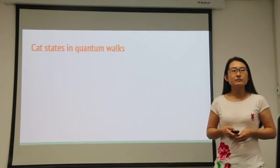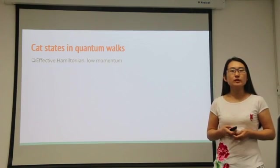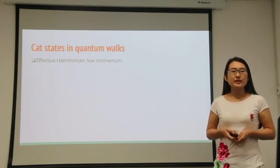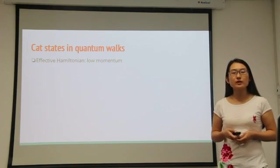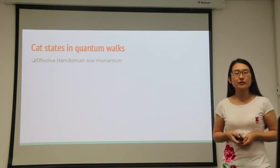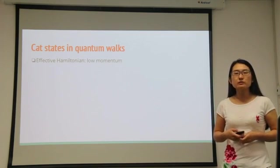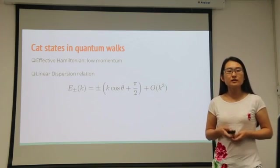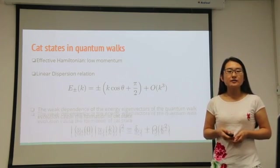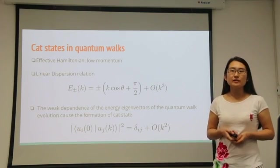This interesting behavior of the quantum walk evolution can be explained as follows. A delocalized initial state of the walker in dual space corresponds to a small momentum state. The low-momentum effective Hamiltonian has a linear dispersion relation, and the eigenvector is weakly dependent on momentum.